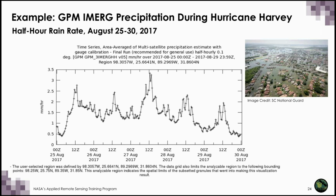Another option in the Giovanni tool is to plot a time series. This is the IMERG product centered on the Houston area for August 25th through 29th, with precipitation in millimeters per hour on the Y axis and half-hourly time in Zulu time on the X axis. The largest amount of rain occurred around August 27th.